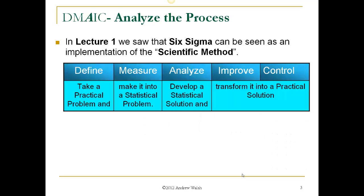In Lecture 1, we saw that Six Sigma can be seen as an implementation of the scientific method. In Define, we take a practical problem, and in Measure, make it into a statistical problem. In Analyze, we develop a statistical solution, and in Improve and Control, transform it into a practical solution.